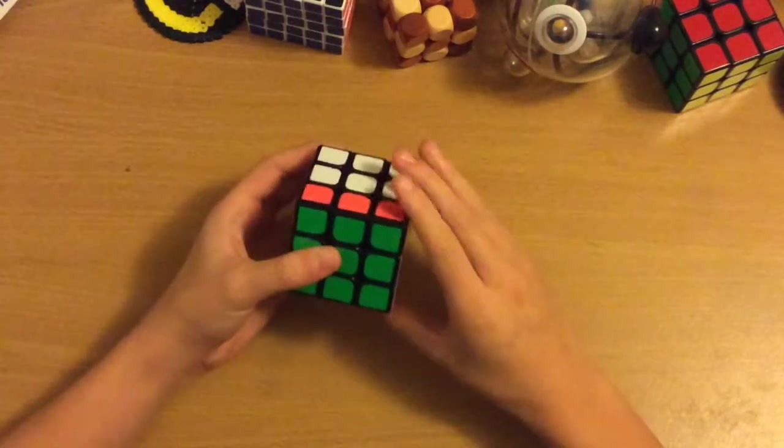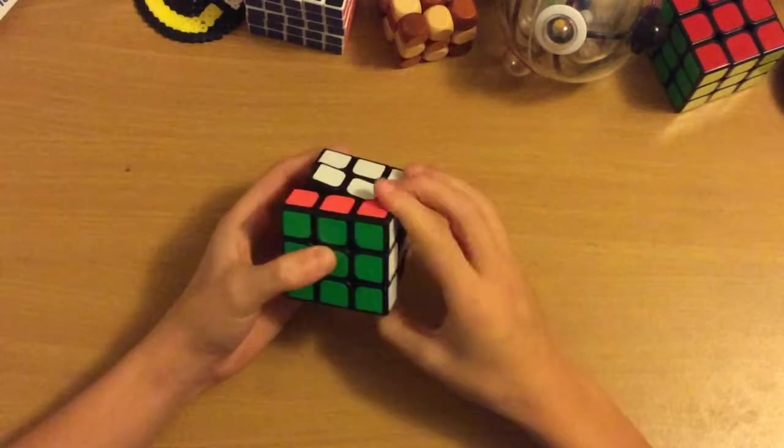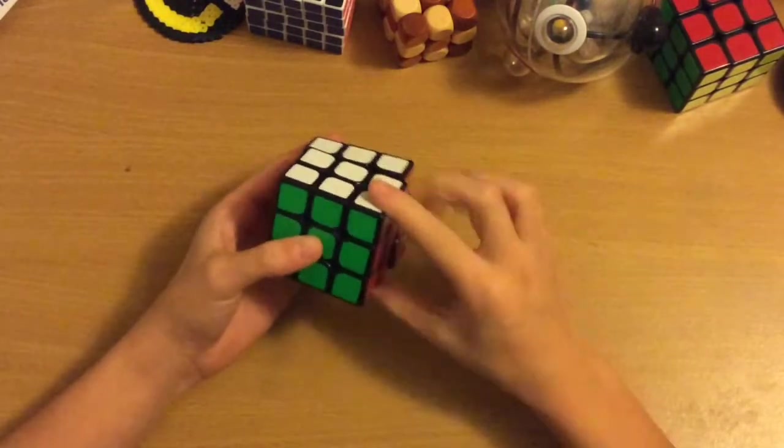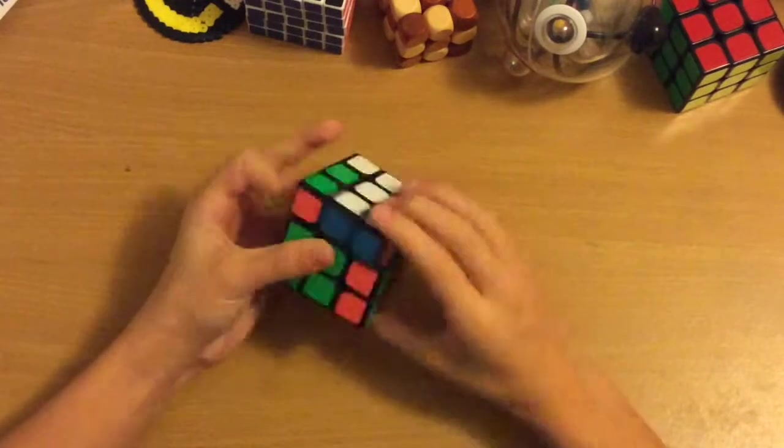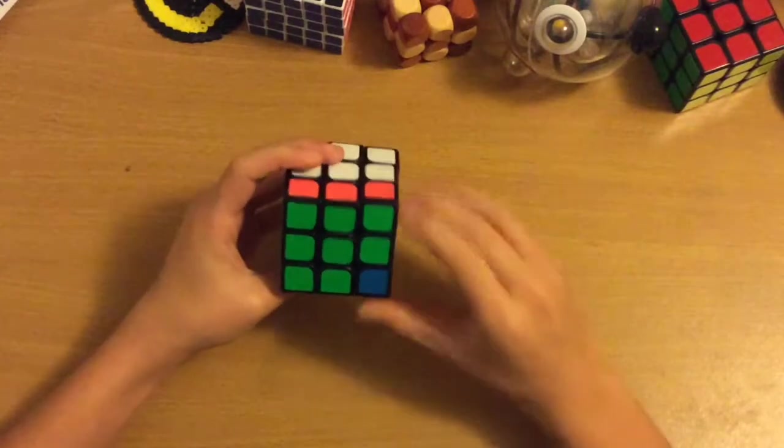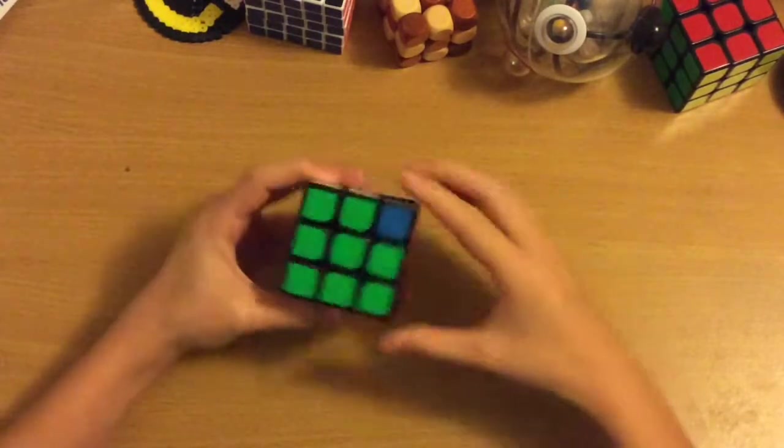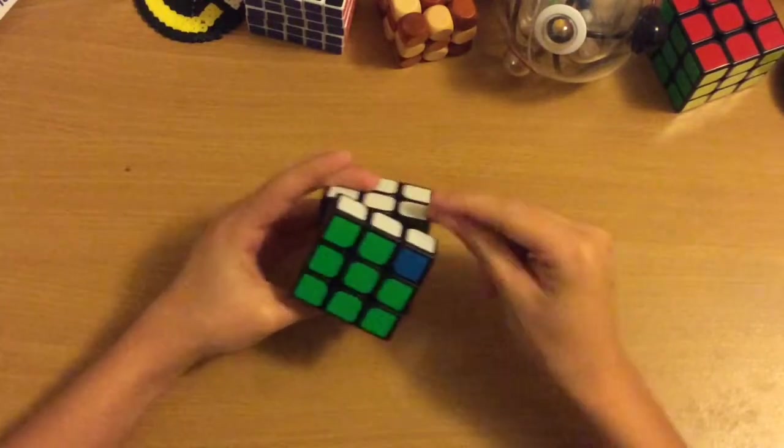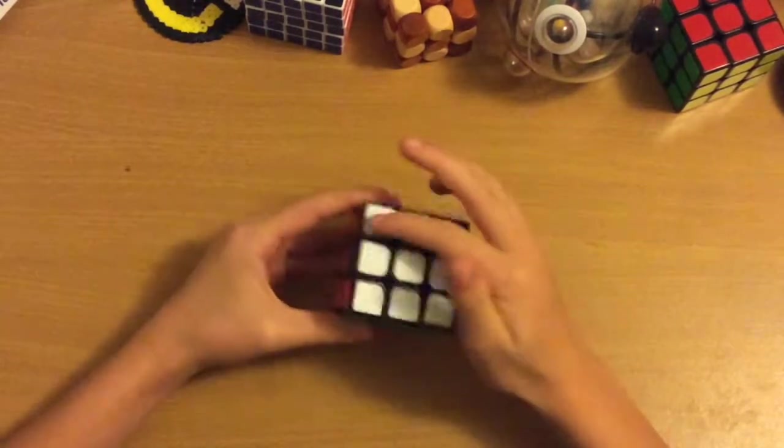So that's the Y perm without the setup move, F and F prime. So you bring the C down to here, do the algorithm, and then you undo your setup move. So since we move C down here, doing F, to undo that, it's just F prime and that's basically what a Y perm is.